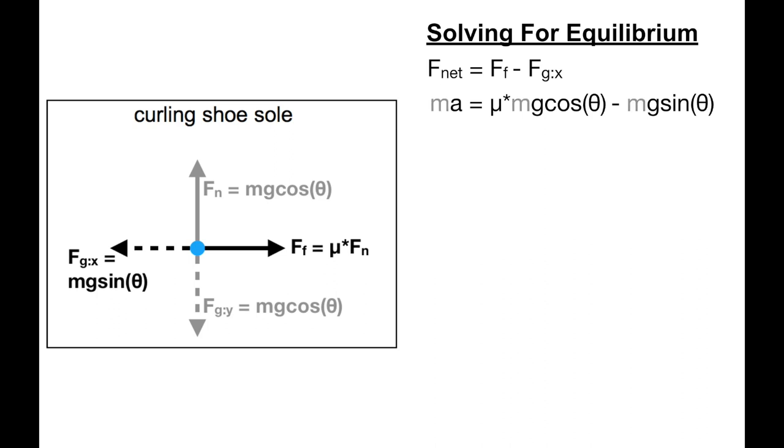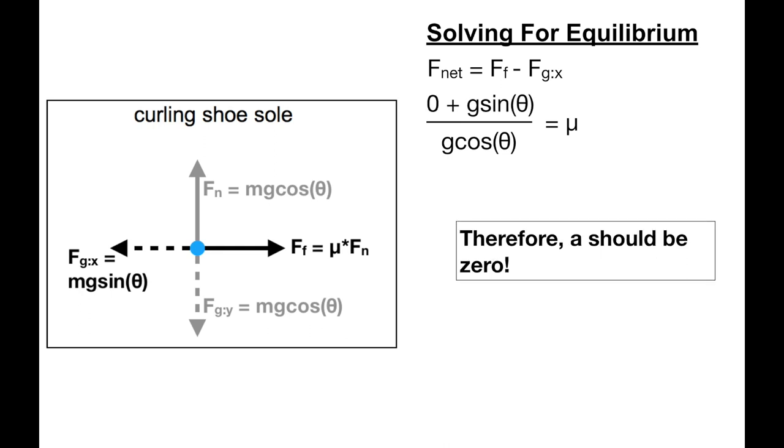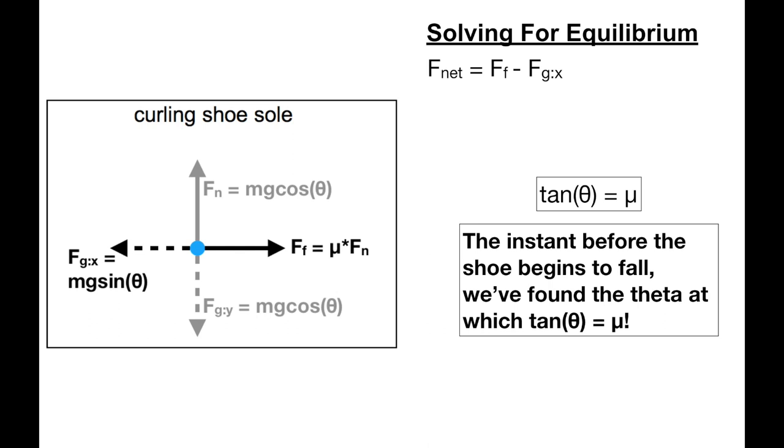To simplify, we can first see that mass is in every chunk of the equation. Then add g sine theta to both sides. Finally, divide by g cosine theta. We're measuring static friction, meaning that at equilibrium the shoe still isn't moving. Therefore, acceleration should be zero. We can cross out g from the numerator and denominator to get sine theta over cosine theta equals mu. Sine over cosine equals tan. So we get the final simplified equation for mu. The instant before the shoe falls, we find that theta at which tan theta equals mu.